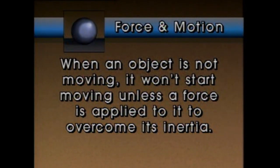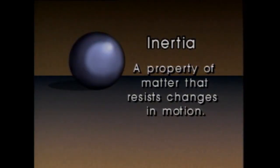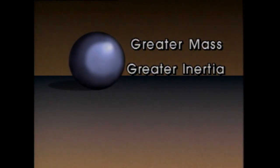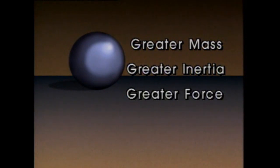Let's take a look at three basic laws of force and motion. The first law states that when an object is not moving, it won't start moving unless a force is applied to it to overcome its inertia. Inertia is a property of matter that resists changes in motion. An object that's not moving remains at rest because of its inertia. And when an object is moving, its inertia causes it to continue moving in a straight line unless a force is applied to it. Inertia relates directly to the mass of an object — so the greater the mass, the greater the inertia, and the greater the force required to start, stop, or change a moving object's direction.